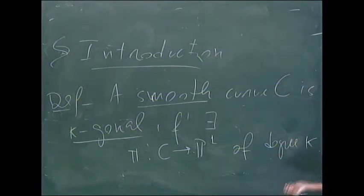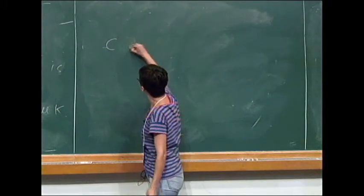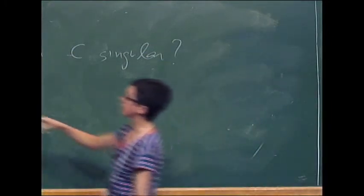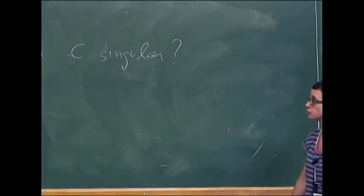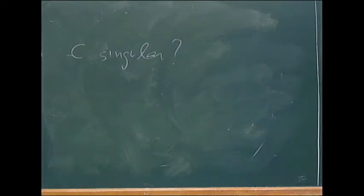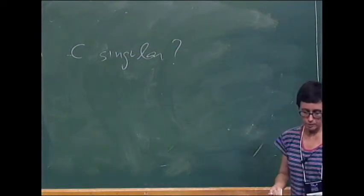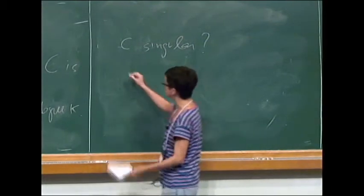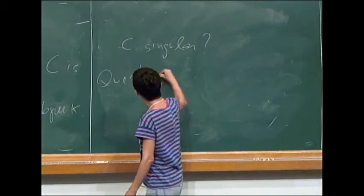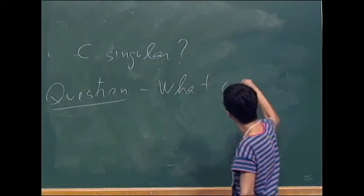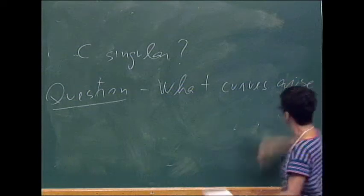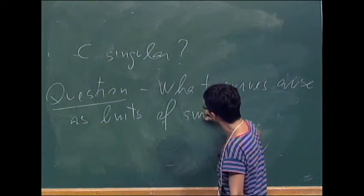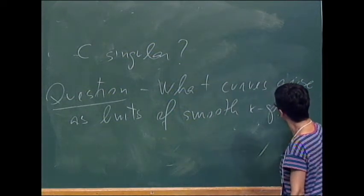The question is: what about C singular? We cannot simply replace smooth with some singularity here, or raise the smoothness condition, because that is not a good definition. What we actually want is to understand what type of curves arise as limits of smooth K-gonal curves. So we want to consider families and limits. The actual question is: what curves arise as limits of smooth K-gonal curves?